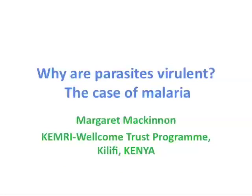Malaria remains one of the three top killer diseases of the world. It's been like that for several millennia and it's still very widespread. The question is why? What is it about this parasite that leads to its evolutionary success? And if we knew what led to its evolutionary success, what would we do about using that knowledge when we come to control it? That's the question I want to address in this talk.